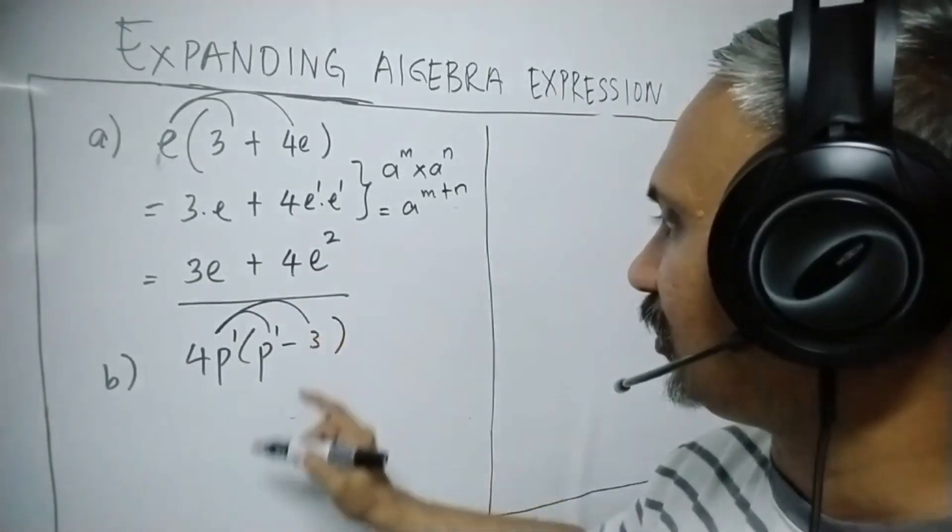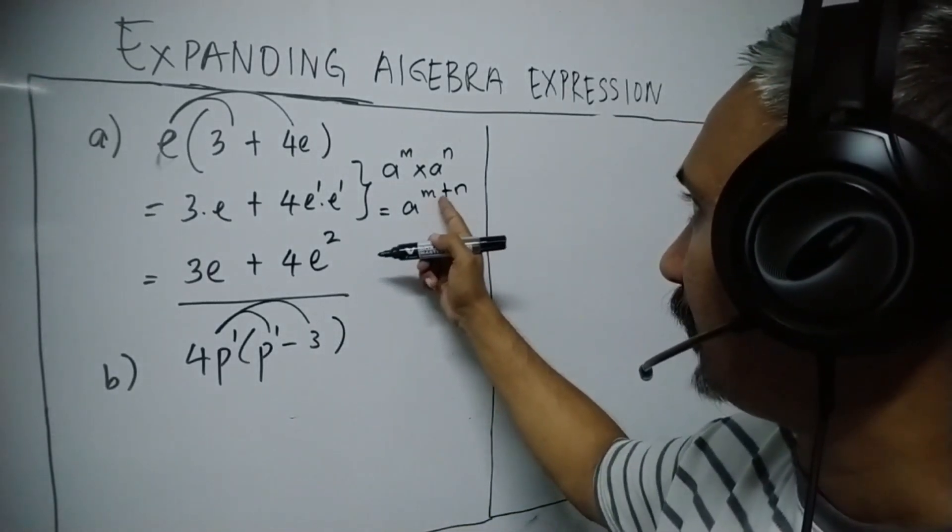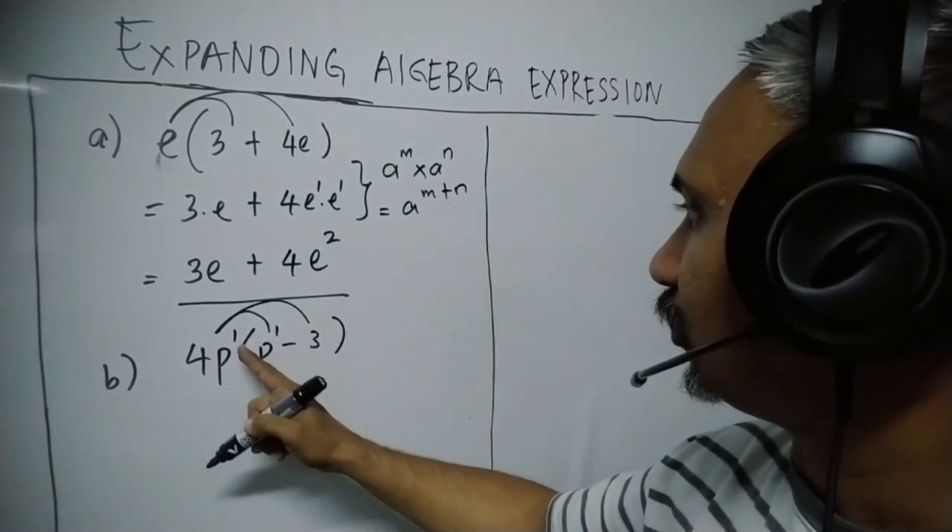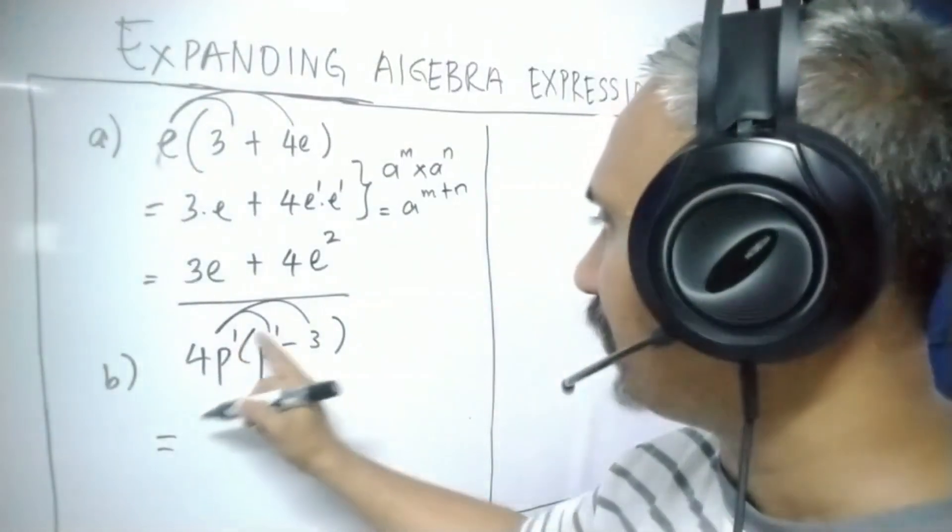The P here is 1, P here is 1. Follow the rules here, M and N you can plus. So if P1 and P1, so it becomes 1 plus 1.